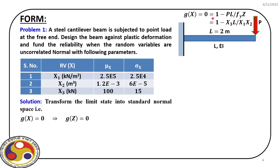For the time being, let us see if we change the format of the limit state. Earlier it was x1·x2 minus x3·L equal to 0, but now let us change the format to gx equal to 1 minus x3·L divided by x1·x2 equal to 0. All other descriptions — length of 2 meters and the uncertainties — remain the same. Let us solve this problem and see whether we get the same answer, which will determine whether the problem of lack of invariance is addressed.